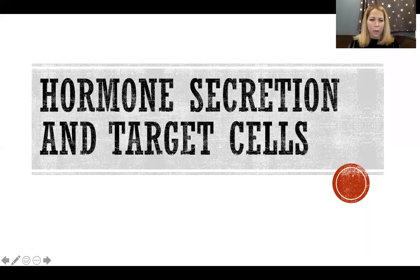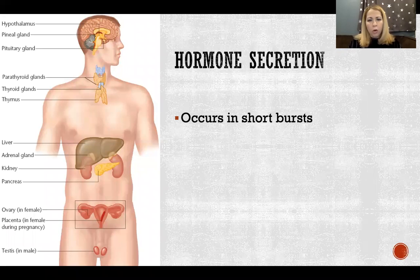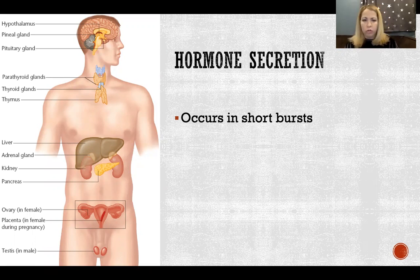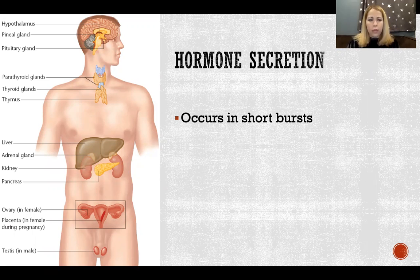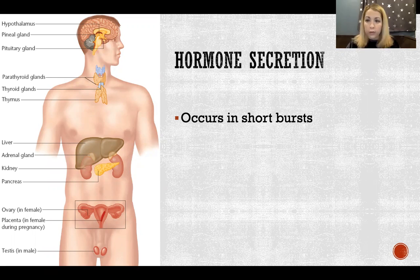In this video, I'm going to talk about hormone secretion and target cells. Hormones are chemical regulators secreted by endocrine glands and cells and tissues. When there is stimulation for hormones to be secreted, they are secreted in short bursts — they're not just always secreted by whatever gland or cell that secretes them.